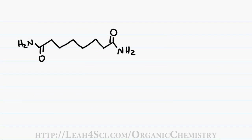When you have more than one amide, you treat it the same way but simply include the prefix di before the functional group to show that you have two.